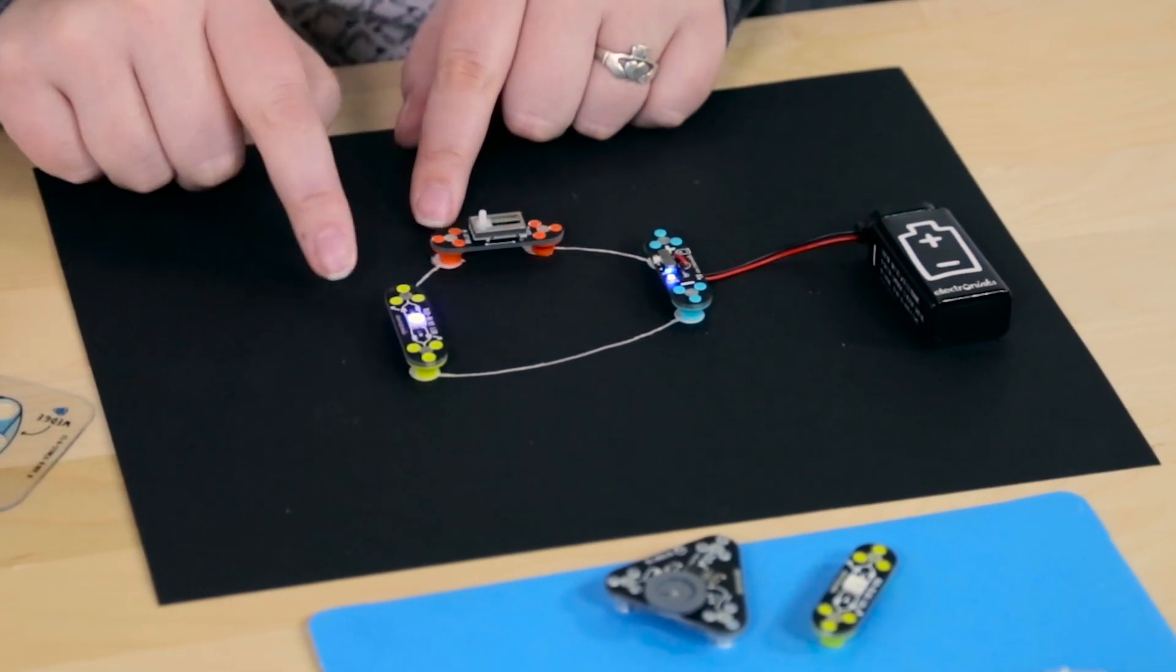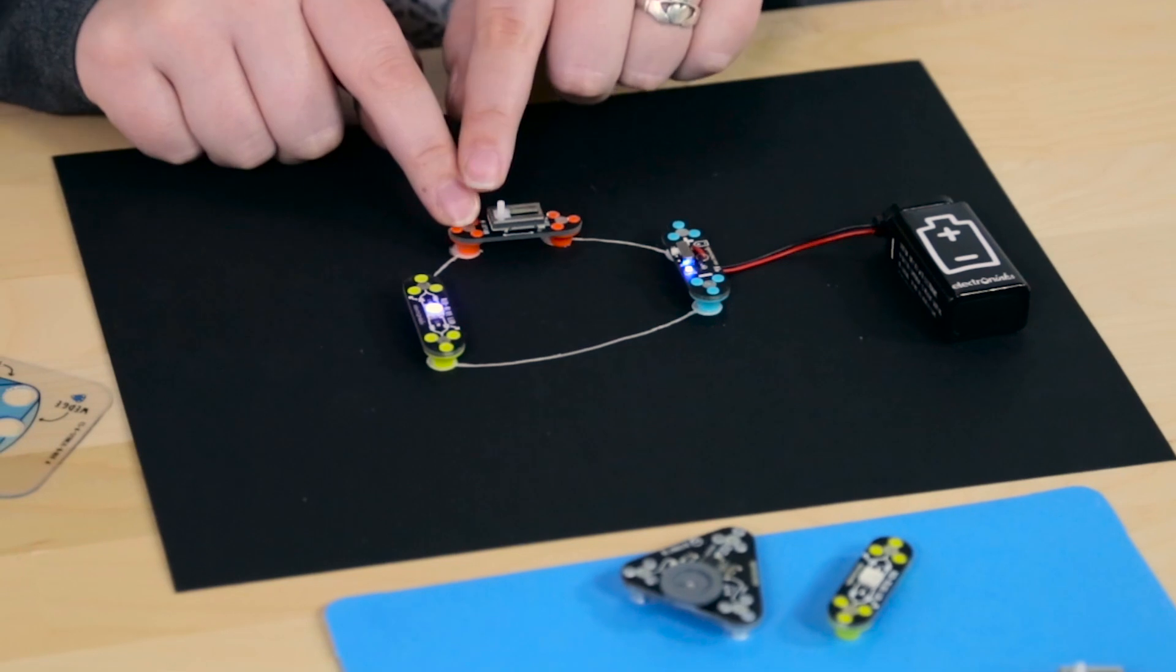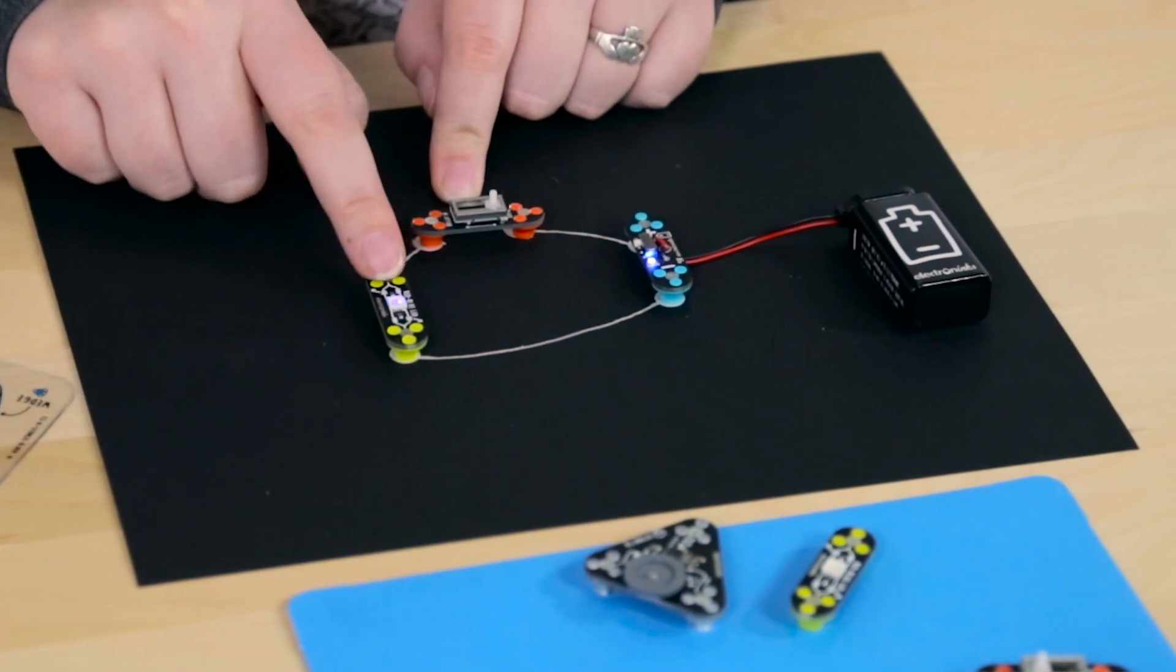In the bright position, I have zero ohms. So my light is nice and bright. Dim, 100 kilo ohms, light is dim.